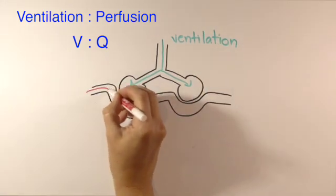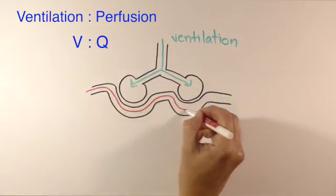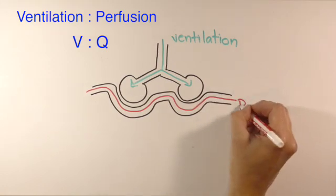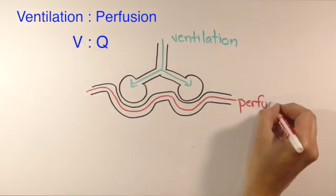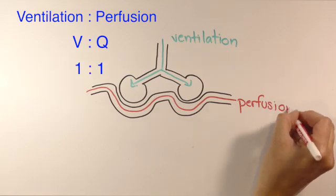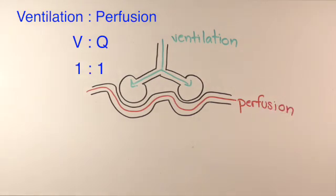In a perfectly efficient cardiorespiratory system, there would be just enough ventilation to fully saturate the blood, so no effort is wasted. A ventilation to perfusion ratio close to 1 to 1. In reality, the ratio is closer to 0.8 to 1.